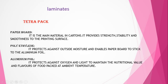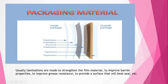The next packaging material is laminates, also known as Tetrapack. Tetrapack consists of paperboard, polyethylene, and aluminum foil. Paperboard provides strength, stability, and a smooth printing surface. Polyethylene protects against outside moisture and enables the paperboard to adhere to the aluminum foil. The aluminum foil layer protects against oxygen and light to maintain the nutritional value and flavor of the food at ambient temperature. These laminates are mainly used to strengthen the film, improve barrier properties, improve grease resistance, and provide a heat-sealable surface.